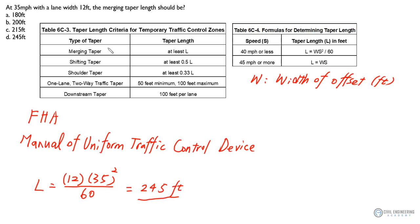And different tapers will have associated or required taper lengths. So this is the minimum required taper length for each type of taper. For instance, for a merging taper, we should use at least L for the taper. And this L can be calculated by using the formulas in Table 6C-4.